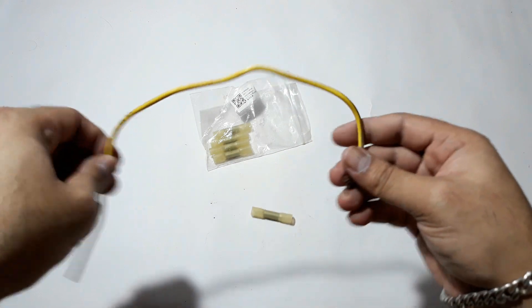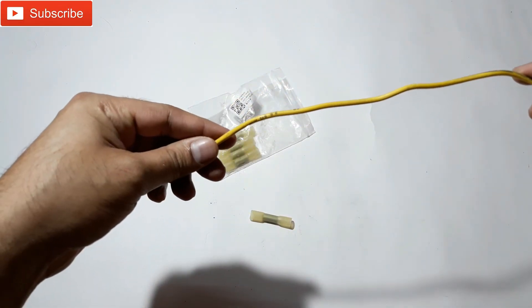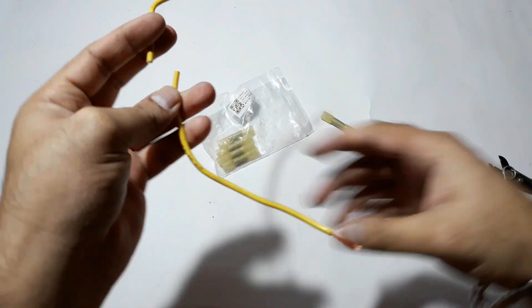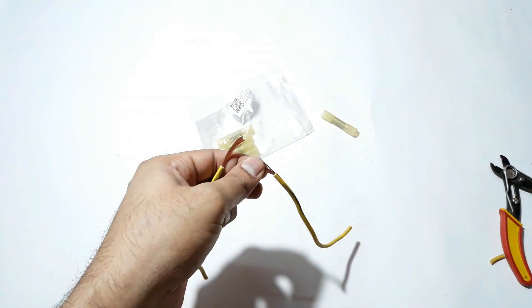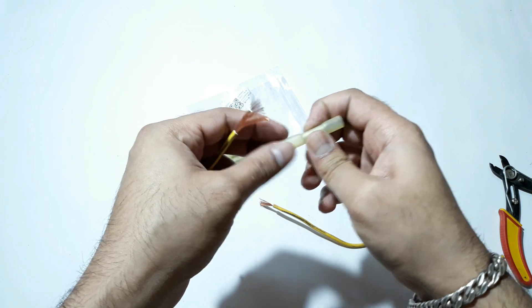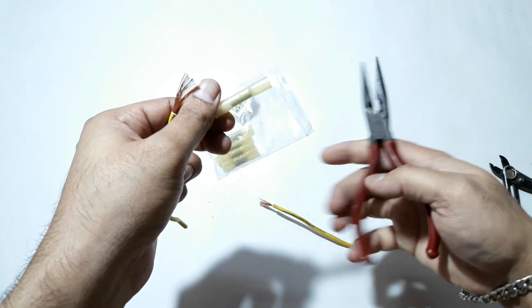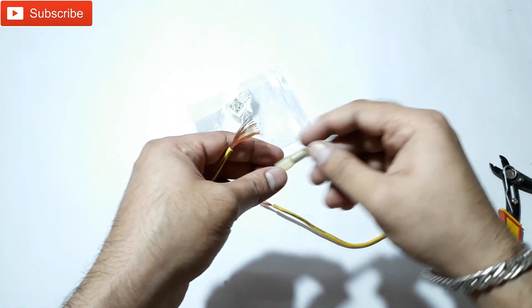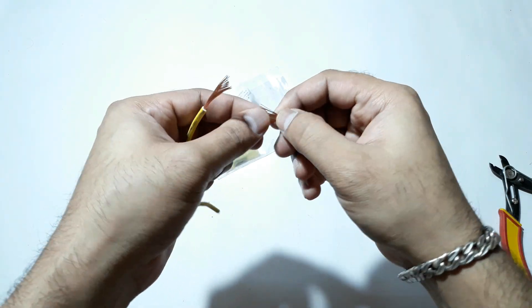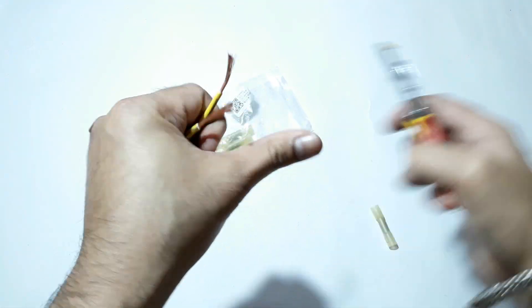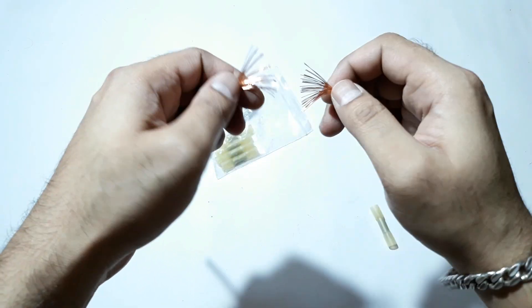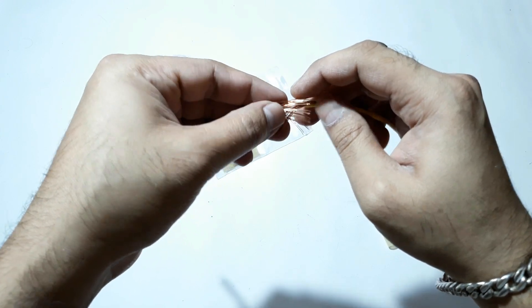This is a 2.5mm electrical wire. To clip this thing you need a clipper, but I don't have one right now, so I'm going to use this plier instead.